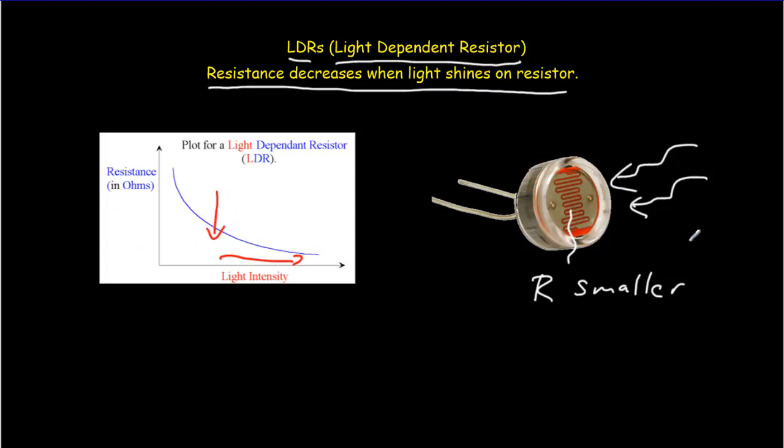So we might have a burglar alarm and say we've got a beam shining on the resistor here. And that would keep the resistance very low. And if the burglar should break that beam, then the resistance becomes very high and this could trigger a burglar alarm.